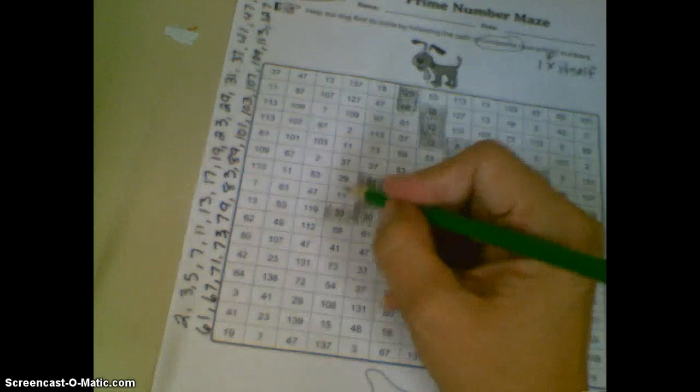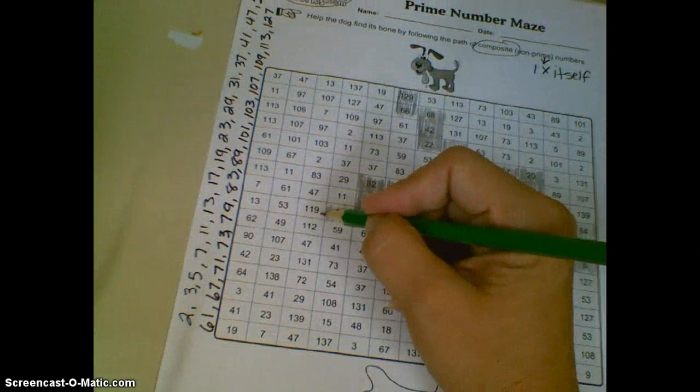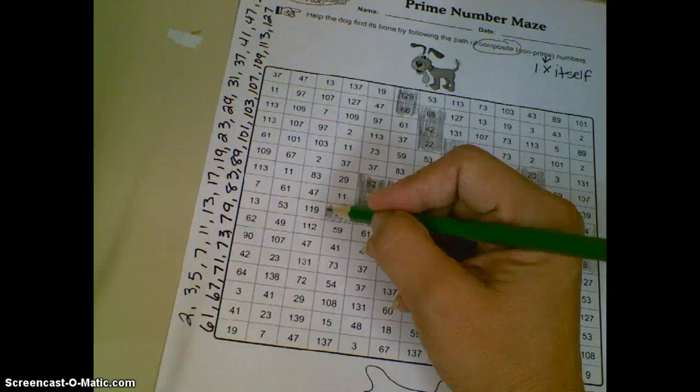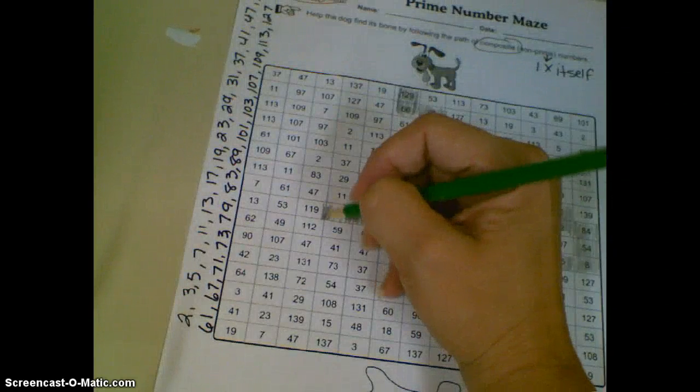And now, we have to look. 11 is prime. 119 is not prime. 59, if we look at our list, is prime. So we want to go this way, 119.